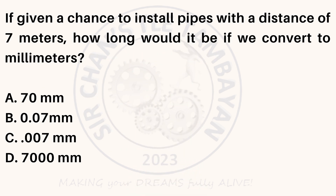If given a chance to install pipes with a distance of 7 meters, how long would it be if we convert to millimeters? A. 70 millimeters. B. 0.07 millimeters. C. 0.007 millimeters. D. 7,000 millimeters.